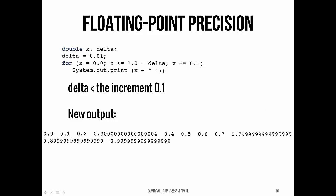Here's how we might fix it. We use some tiny delta value. Here it's 0.01 and it's less than the increment we're adding by. And we just say as long as x is less than or equal to 1.0 plus that delta.